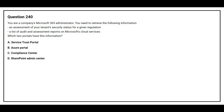Question number 240. You are a company's Microsoft 365 administrator. You need to retrieve the following information: an assessment of your tenant's security status for a given regulation, and a list of audit and assessment reports on Microsoft's cloud services. Which two portals have this information? Option A, Service Trust Portal. Option B, Azure Portal. Option C, Compliance Center. Option D, SharePoint Admin Center. The correct answers are Option A, Service Trust Portal, and Option C, Compliance Center.